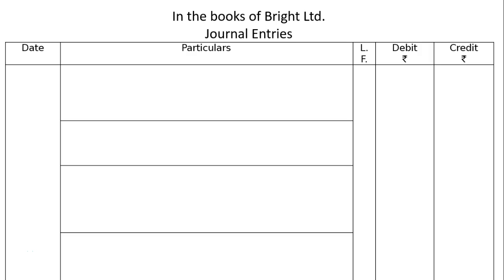Bright Ltd issued 5,000 10% debentures of Rs 100 each on 1st April. The issue was fully subscribed. Interest on the debentures is payable half-yearly on 30th September and 31st March, and the tax deducted at source is 10%. Pass necessary journal entries relating to the debenture interest for the year ending 31st March 2016 and transfer of interest on debentures for the year to the statement of profit and loss.